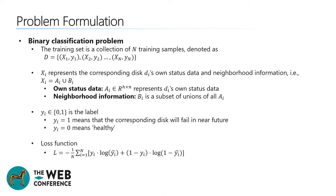We introduce the problem formulation. The disk failure prediction task is formulated as a binary classification problem. The training set is a collection of n training samples. For each sample, Xi represents the corresponding disk's status data and neighborhood information. Xi is a union of Ai and Bi, where Ai represents the disk's own status data and Bi represents the disk's neighborhood information. Yi is the label: Yi equals 1 meaning that the corresponding disk will fail in the near future; otherwise Yi equals 0, meaning that the corresponding disk is healthy. In this work, we use the binary cross-entropy loss as our loss function.